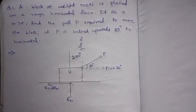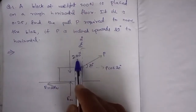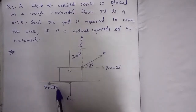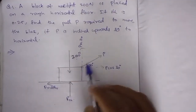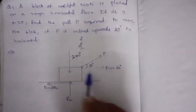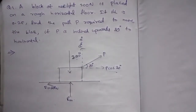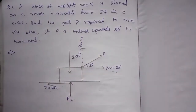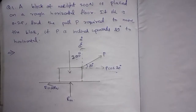Here is the figure: here is the block, 200 Newton. Here is the normal reaction force. Here is the pull force, with the force at a 30-degree angle inclined. Here is the horizontal and vertical component: P cos 30 and P sin 30. The friction force F equals mu times R, acting opposite to the direction of the applied force. Here are the horizontal and vertical components.